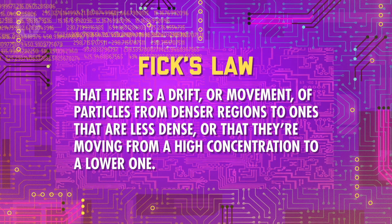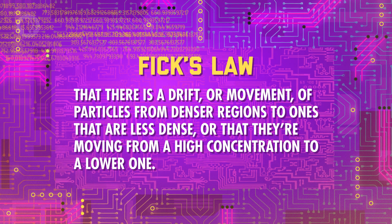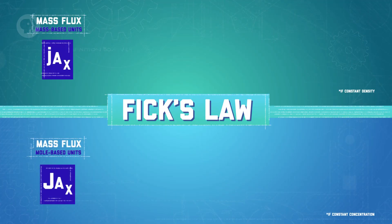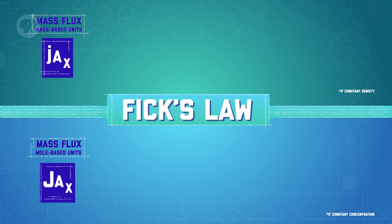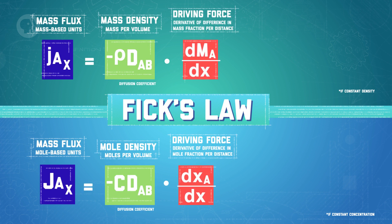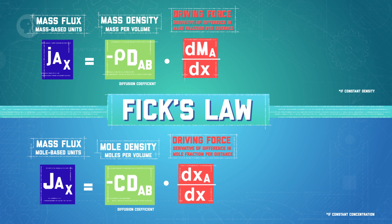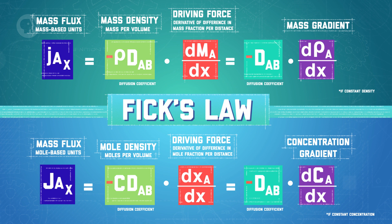Now, if we really want to be able to understand and quantify mass transfer, then we're going to need to learn about Fick's Law. Fick's Law states that there's a drift, or movement, of particles from denser regions to ones that are less dense — or that they're moving from a high concentration to a lower one. Fick's Law defines the rate of this drift, the diffusion, or mass flux in our case, as proportional to the product of the thermophysical property — which is the diffusivity constant or coefficient — and the driving force, which will be our concentration gradient. The negative sign here shows us that the diffusion will occur in the direction opposite that of the increasing concentration, or from a higher concentration to a lesser one.